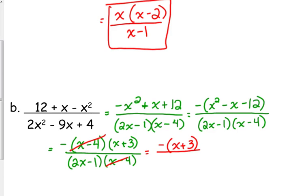We've got x minus 4 in the top and in the bottom. So, we are left with negative times x plus 3 over 2x minus 1. Now, you may see this with that negative distributed or written different ways. Those are all equivalent forms of that answer. It's just manipulating that negative between around a fraction.